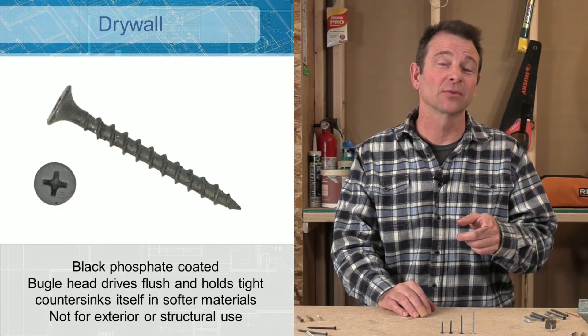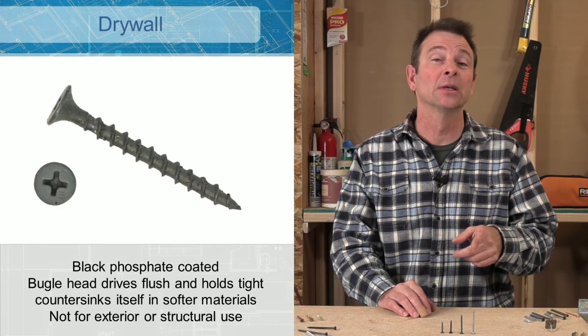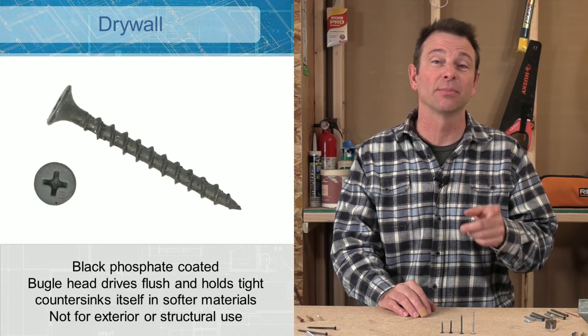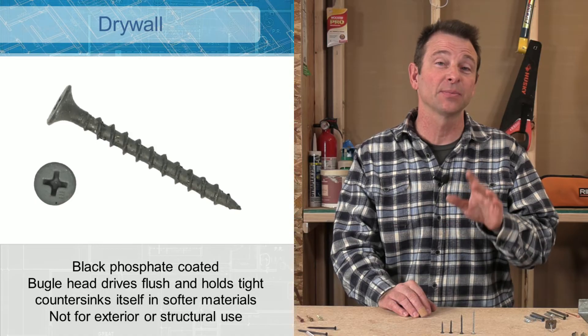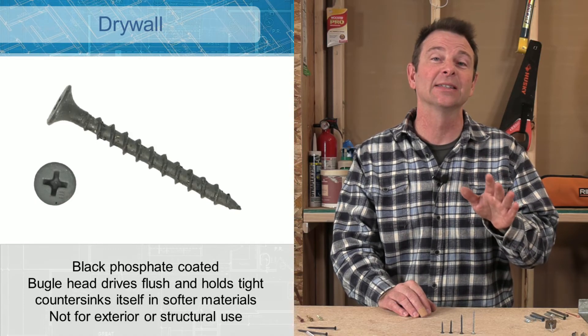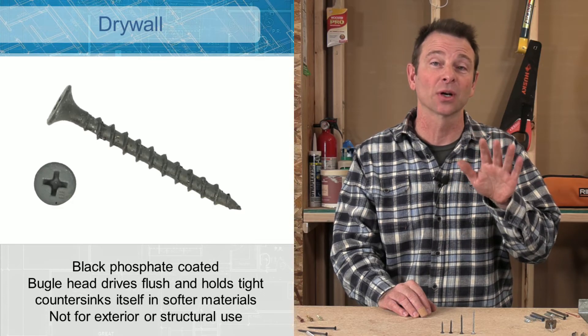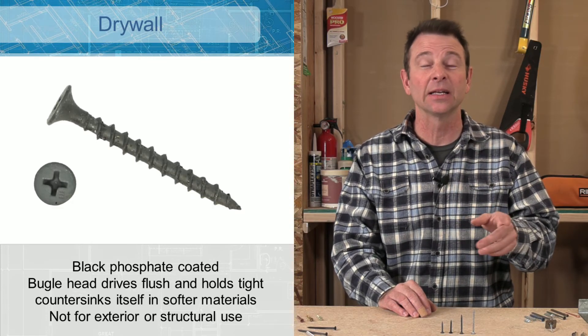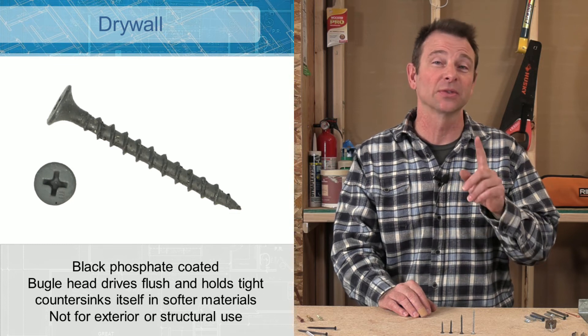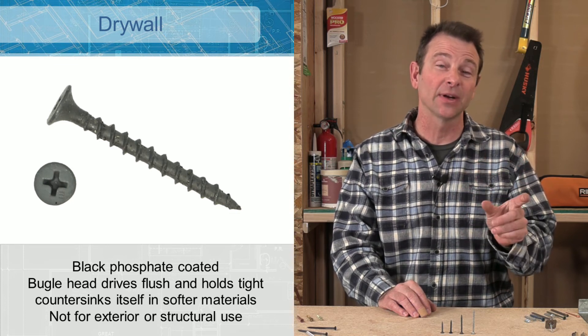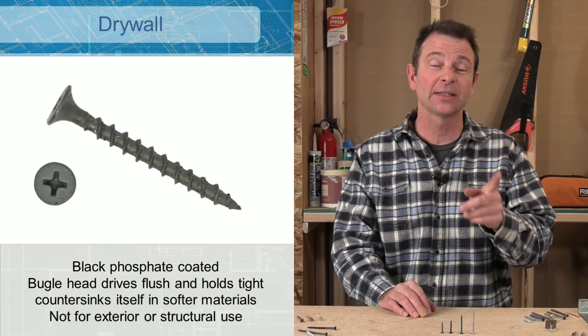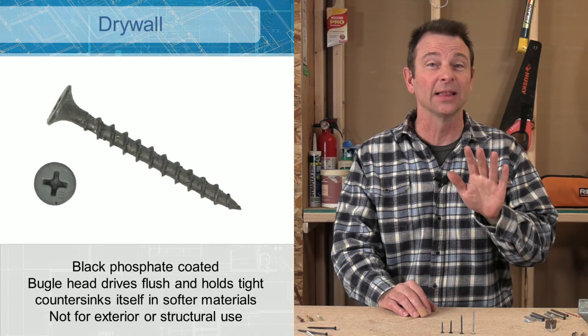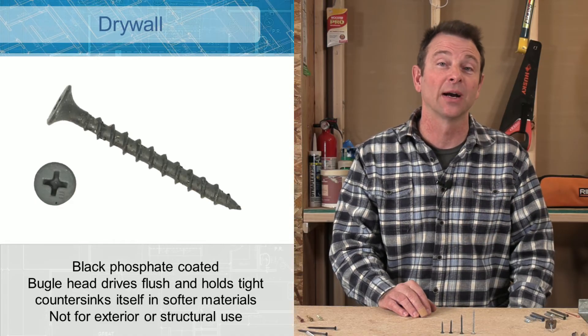If you look at this drywall screw, it looks very similar to the one we just looked at, the general purpose. The only real difference between these two screws is the plating or the finish or coating on it. This has a black phosphate coating on it. This would be used for drywall. You'll see a lot of these. They come in different lengths and are very similar to this one. There's not a lot of variations to drywall screws.